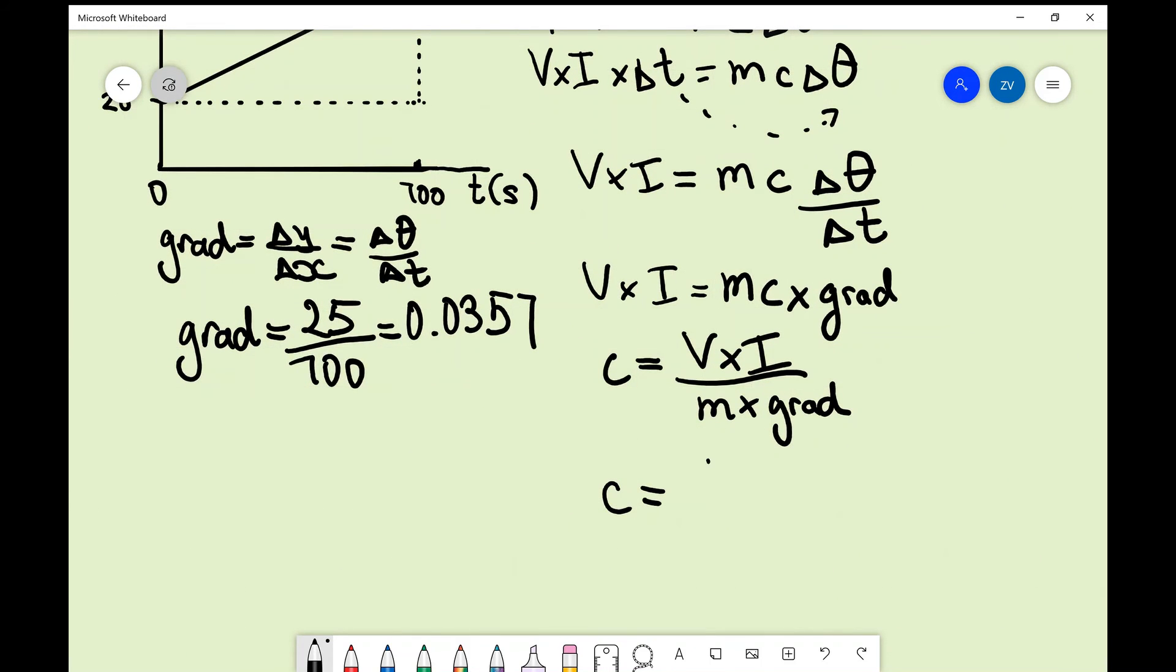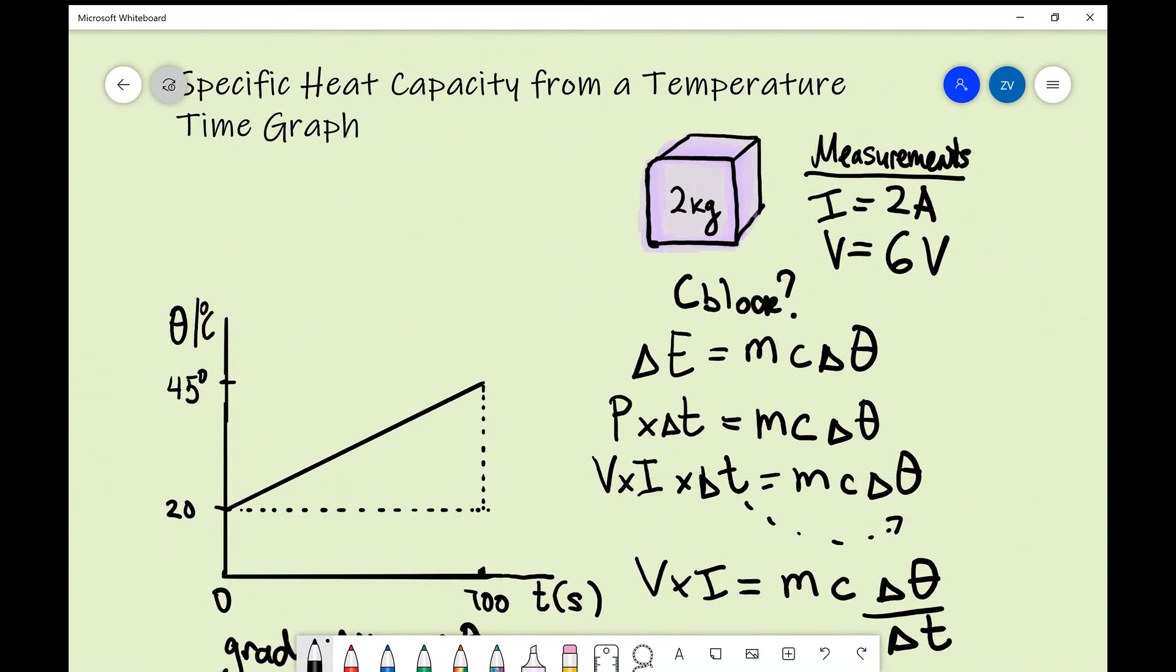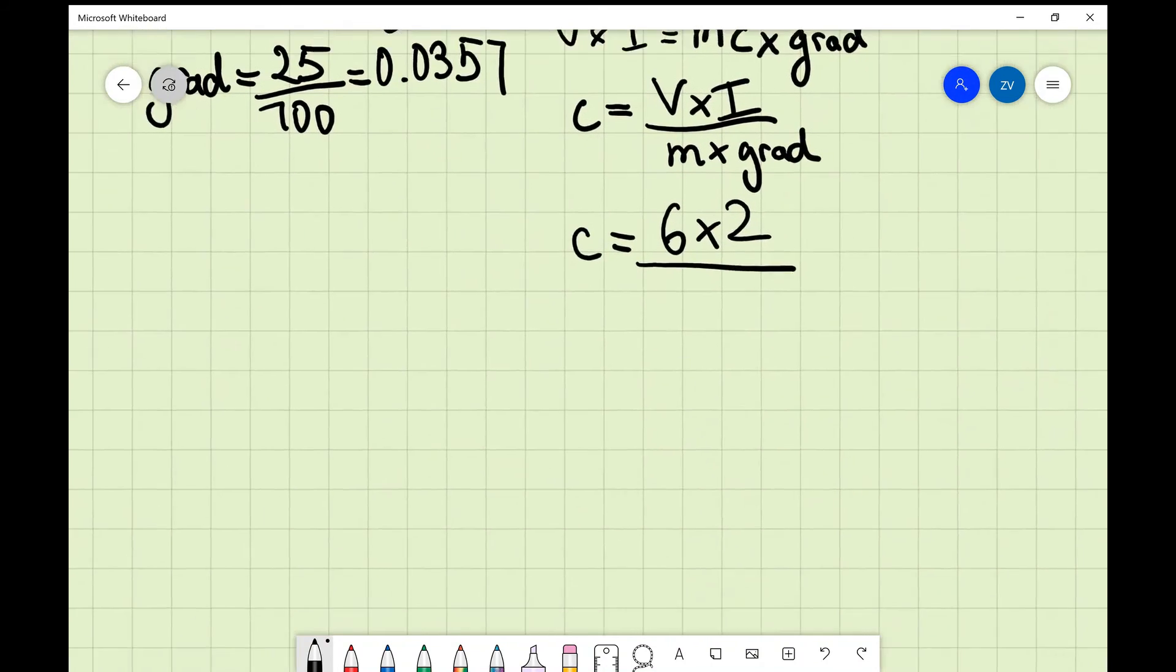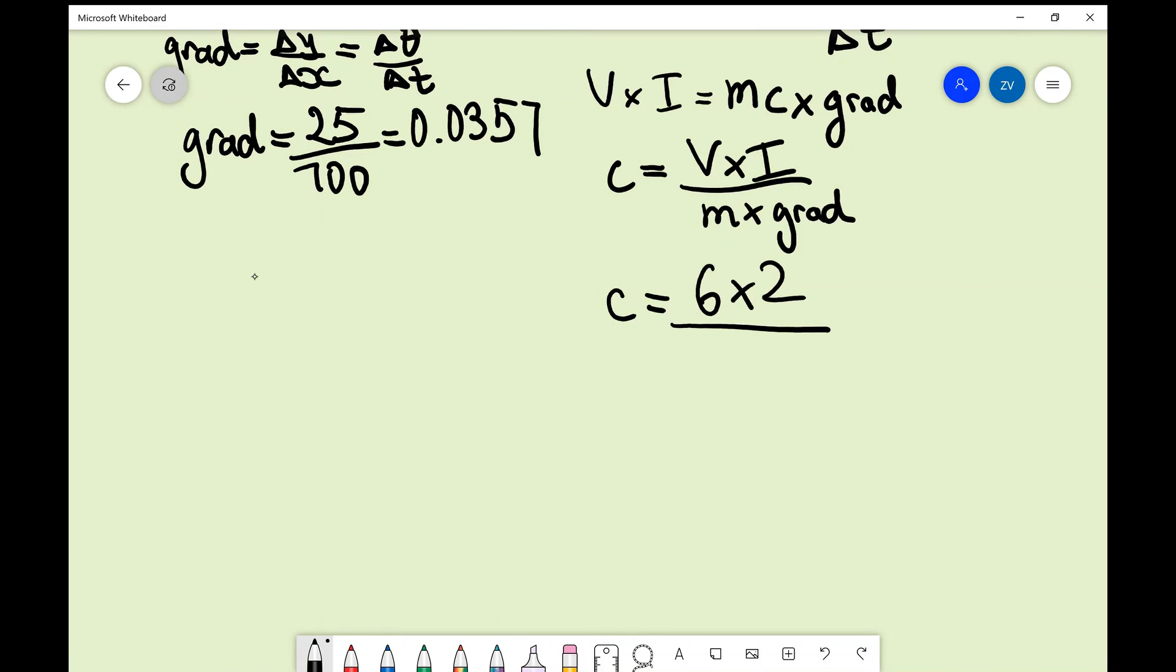So this is going to be equal to 6 times 2 divided by the mass of the block, which as we can see here is 2 kilograms, divided by 2 multiplied by the gradient, which is 0.0357.